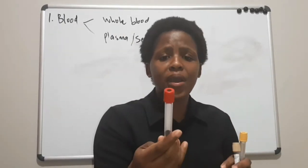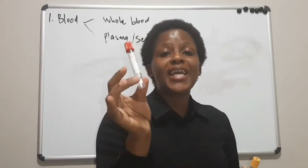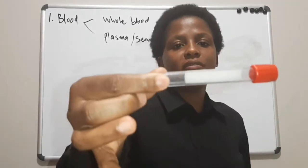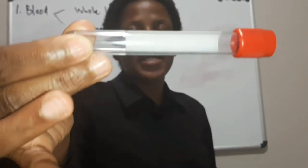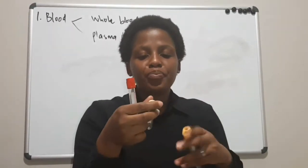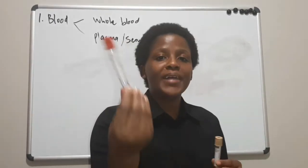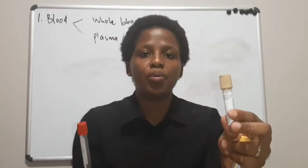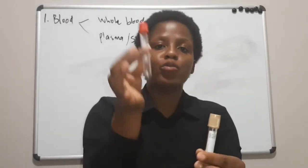The red tube is also a plain tube, but this one contains a clot activator on the inside. The clot activator's responsibility is to make sure that when you collect your blood in here, it clots quicker than blood collected in a plain tube. But still, from both of these tubes, you will get serum.